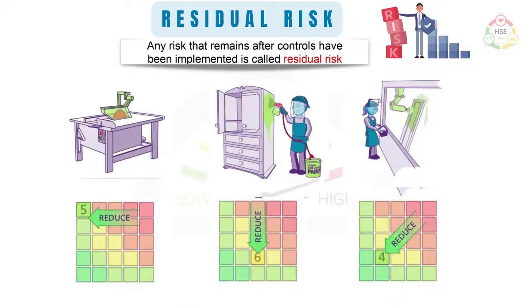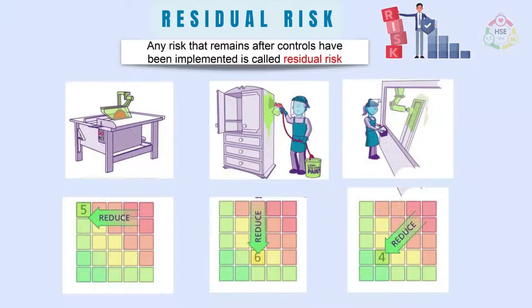Any risk that remains after controls have been implemented is called residual risk. In the charts below we can observe the residual risk of different activities.